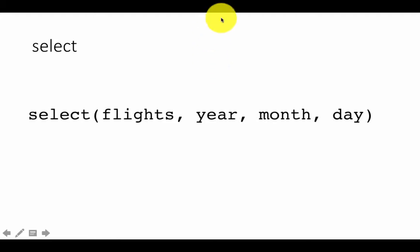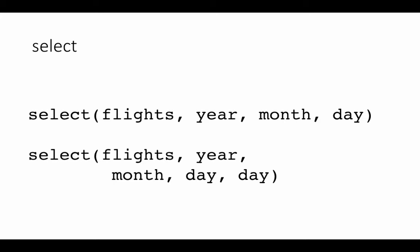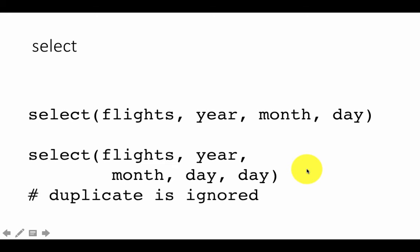That covers the arrange function. Now let's look at the select function, which is used to select a subset of the columns. For example, select(flights, year, month, day) will give you a result table with only those three columns. Select is to get a subset of columns, whereas filter and arrange gave back all the columns. You can also select the same column twice — dplyr simply notes the duplicate and ignores it, so it won't be displayed twice.